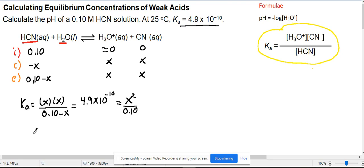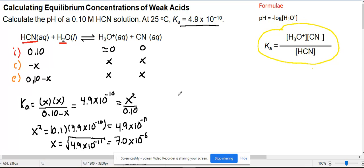From here, X squared equals 0.1 times 4.9 times 10 to the negative 10, which equals 4.9 times 10 to the negative 11. X is the square root of that number, which is 7.0 times 10 to the negative 6. Remember, this X is the concentration of H3O+ at equilibrium.